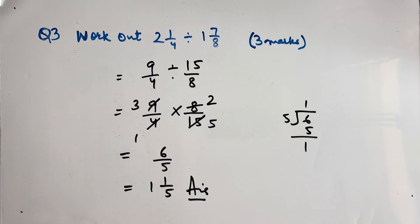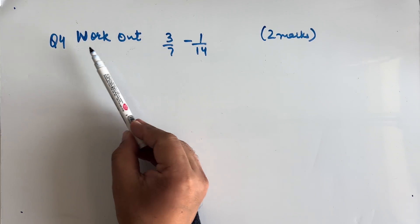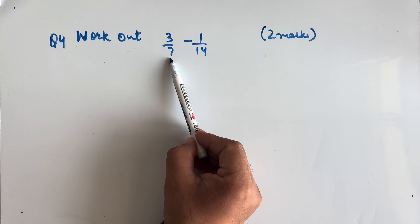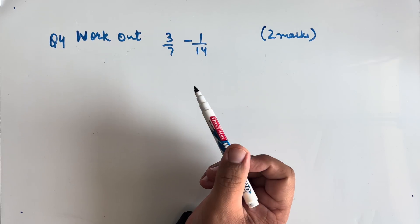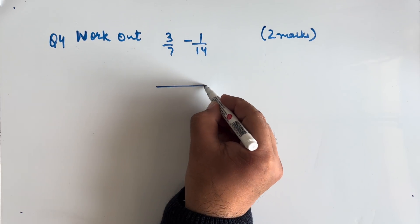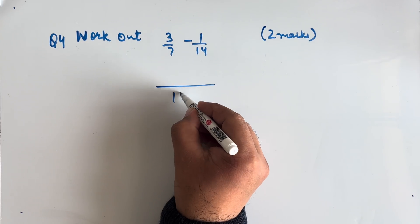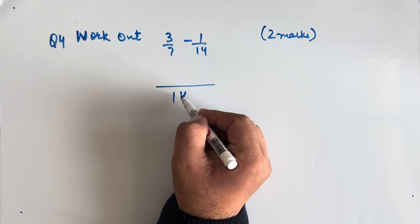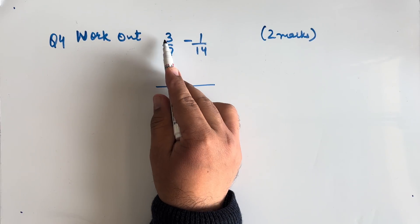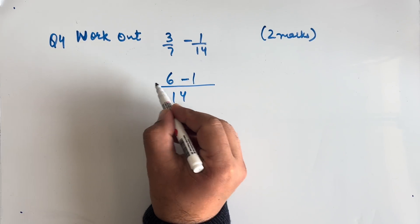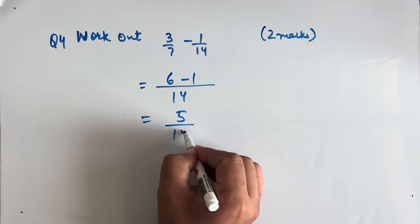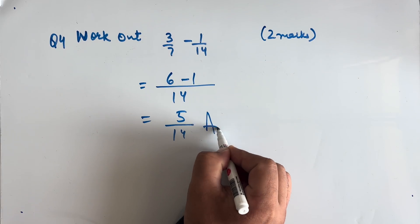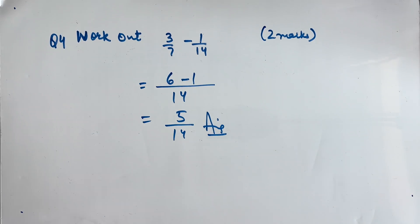Question 4: Work out 3/7 minus 1/14. This is worth 2 marks. We take the LCM as 14. Seven twos are 14, so 2 × 3 = 6, minus 1, giving us 5/14 as our answer.